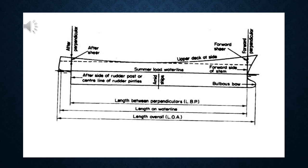We can see the aft perpendicular. It is taken at the aft side of the rudder post. On the forward side, we can see the forward perpendicular. It is a vertical line that intersects the forward side of the stem with the summer load waterline.